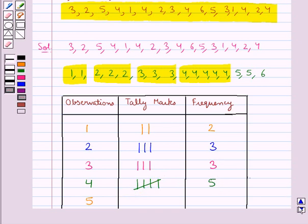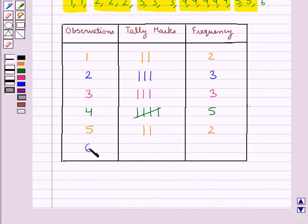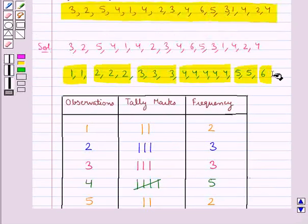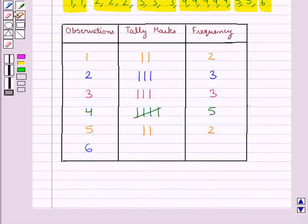Now consider the observation 5. It occurs 2 times and so we will put 2 tally marks and its frequency is 2. Now consider the observation 6. It occurs 1 time. So we will put 1 tally mark and its frequency is 1.